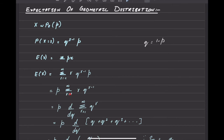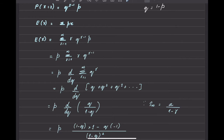Since p is not a function of r, I can take it outside the summation sign, so it becomes p times the summation from r equals 1 to infinity of r times q to the power r minus 1. If you look at the series r times q to the power r minus 1, this is the same as the differential of q to the power r with respect to q — that is, d/dq of q^r equals r times q^(r-1).